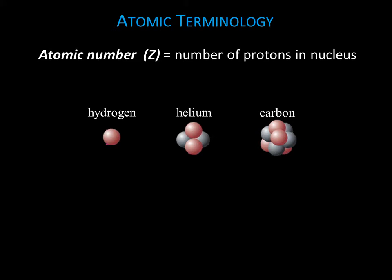And here is some additional atomic terminology. The number of protons in the nucleus is called the atomic number and is denoted by the letter Z. The atomic number for hydrogen, for example, with its one proton, is one. Helium has two protons, so the atomic number Z is equal to two. Carbon has six protons, so Z for carbon is equal to six.